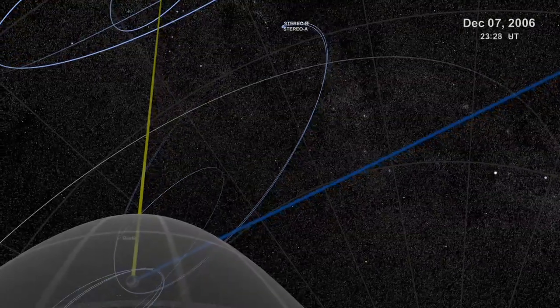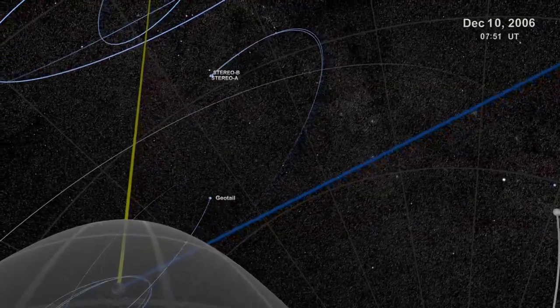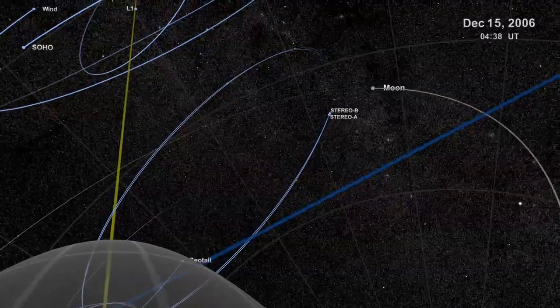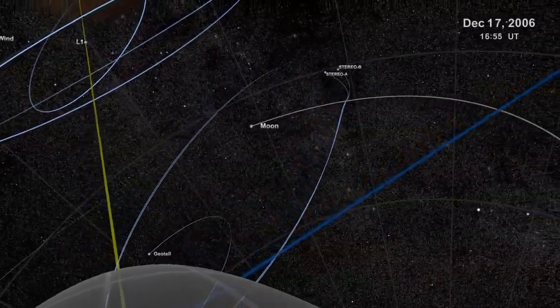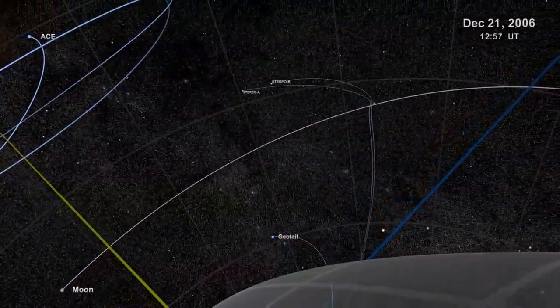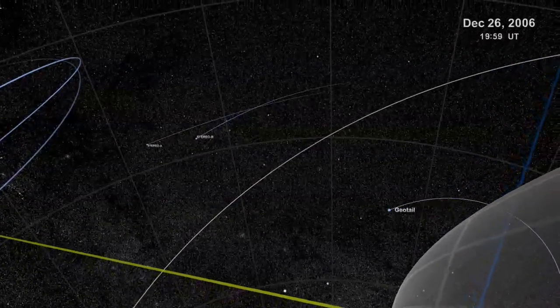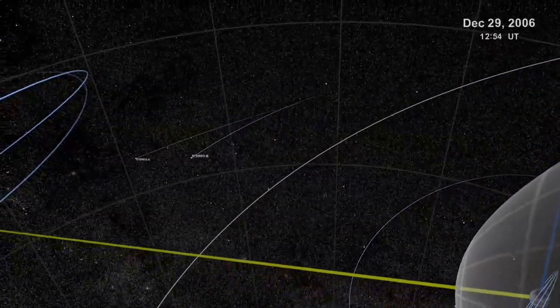A vehicle can't simply fly from place to place. But for some missions, like stereo, precise position makes all the difference. Why? The two stereo satellites will deliver 3D pictures of the sun, similar to the way your two eyes perceive 3D.